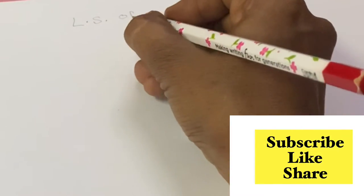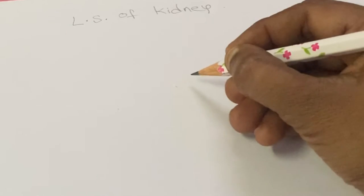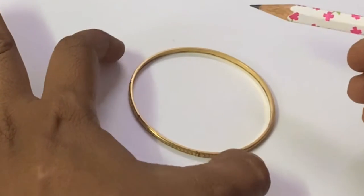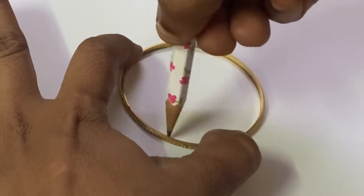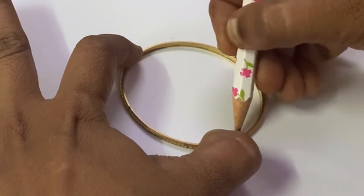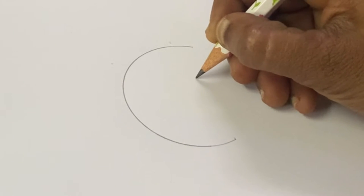So first you have to draw a semicircle. You can take your bangle or anything. Next to the half-circle, you make it curves like this.